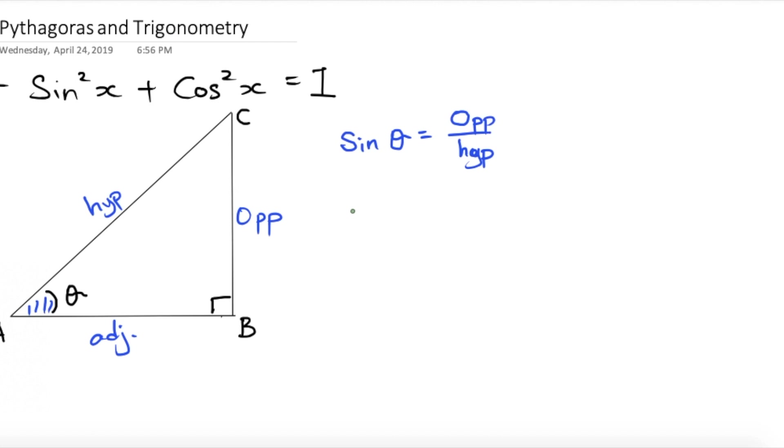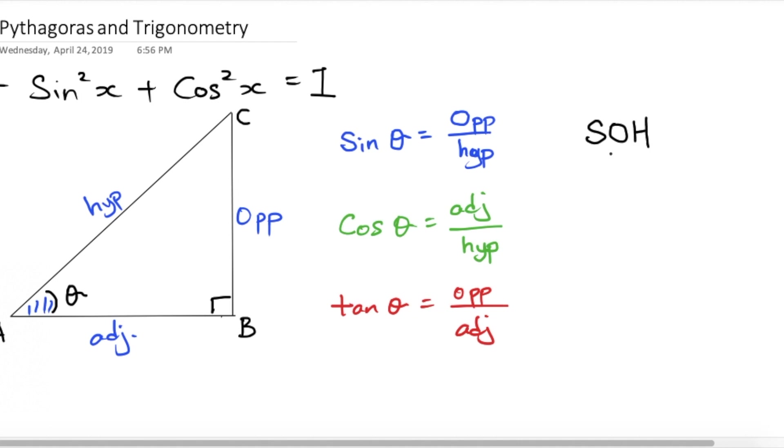And if I want it to be cos theta, cos theta would be adjacent over hypotenuse, so it's adjacent over hypotenuse. And tangent would be opposite over adjacent. And then last time we learned is sine is opposite over hypotenuse, so if it were to be cos, C A is adjacent H.